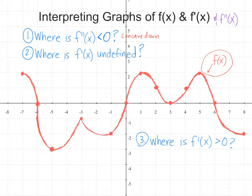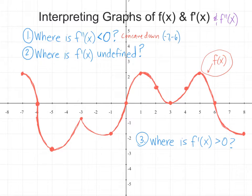It's concave down from negative seven to negative six up here. So I'm just going to list open intervals: negative seven to negative six, where I have a negative second derivative because my function is concave down. It's concave down from negative three...